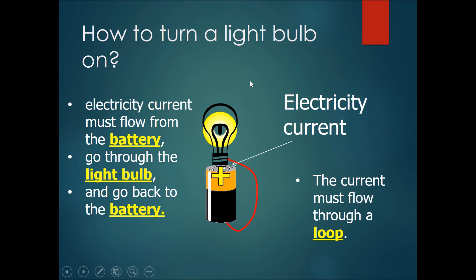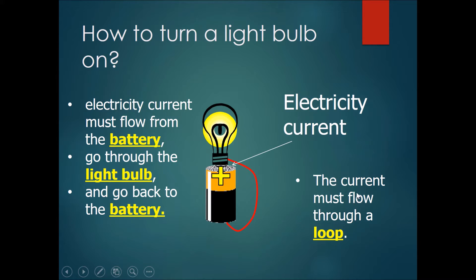How do we turn a light bulb on? Here is a very simple circuit with a battery, a light bulb, and a wire. The current basically flows from one side of the battery through the light bulb, then through the wire, and comes to the other end of the battery. The electric current must flow from the battery, go through the light bulb, and go back to the battery. The current must flow through a loop.